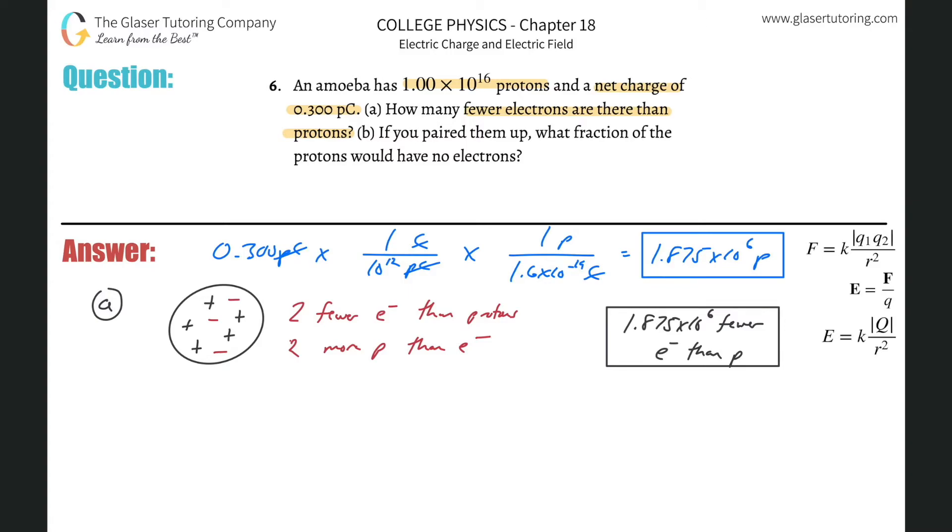And now let it be, if you pair them up, what fraction of the protons would have no electrons? Okay. So what fraction of the protons would have no electrons? So that means basically the excess number we're basically trying to now find. So if something has this many protons, right? 1 times 10 to the 16. And you know that there's only this number fewer electrons than protons. Or in other words, there's that many excess protons than electrons, right? And they're asking us for the fraction of the protons would have no electrons. How do you think we would find that?